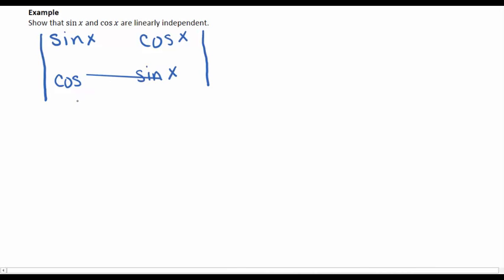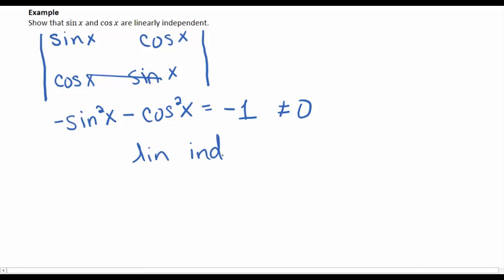And now we'll take the determinant. Sine x times negative sine x is negative sine squared minus cosine times cosine is cosine squared. And this is negative 1, which is not zero. So these, we can say, are linearly independent.